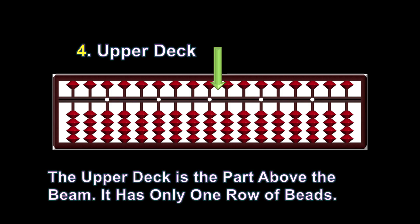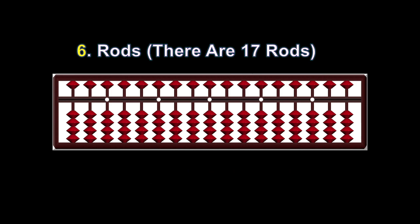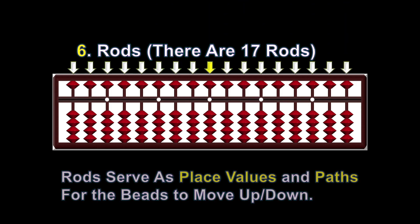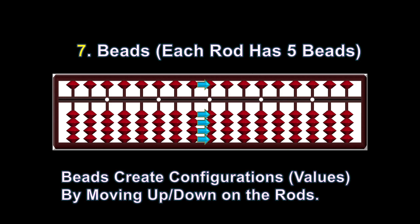The upper deck is the part above the beam and has only one row of beads. The lower deck is the part below the beam and contains four rows of beads. There are 17 rods on this Abacus tool. Rods serve as place values and paths for the beads to move up or down. Beads create configurations or values by moving up or down on the rods.